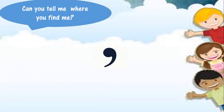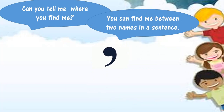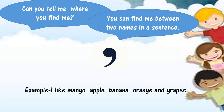I am a Comma. Can you tell me where you find me? You can find me between two names in a sentence, but there should be more than two names in that sentence. For example: I like mango, apple, banana, orange and grapes. Can you see I stand between mango and apple, between apple and banana, between banana and orange?